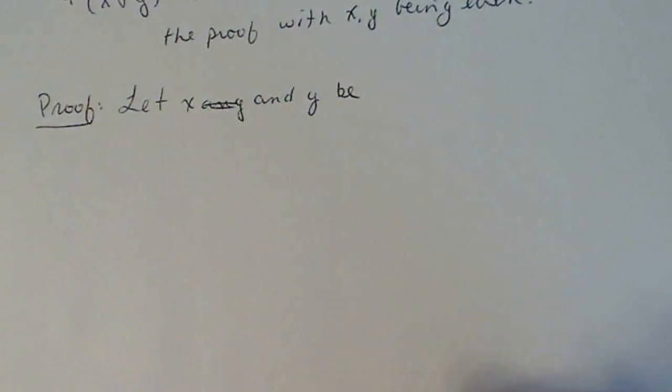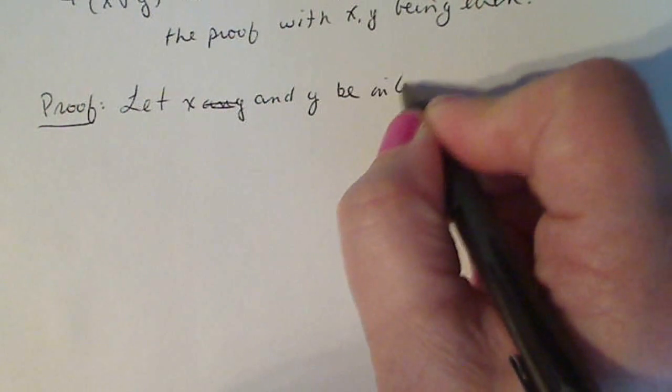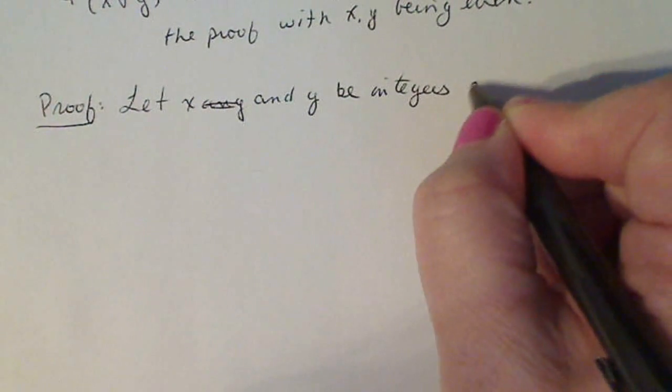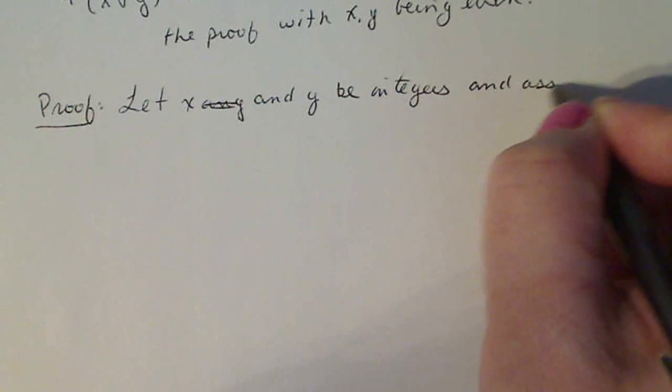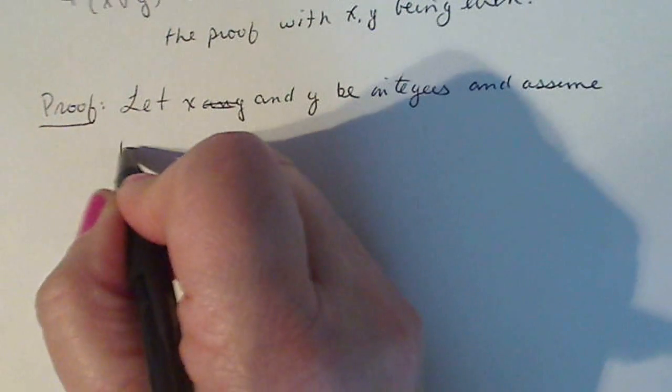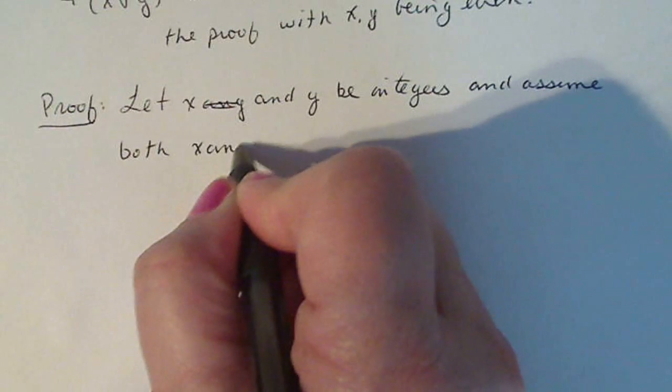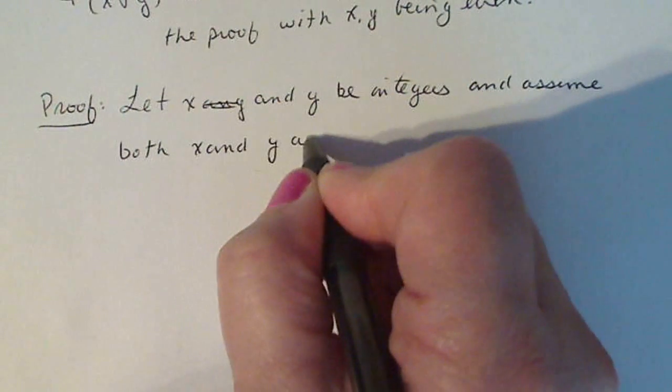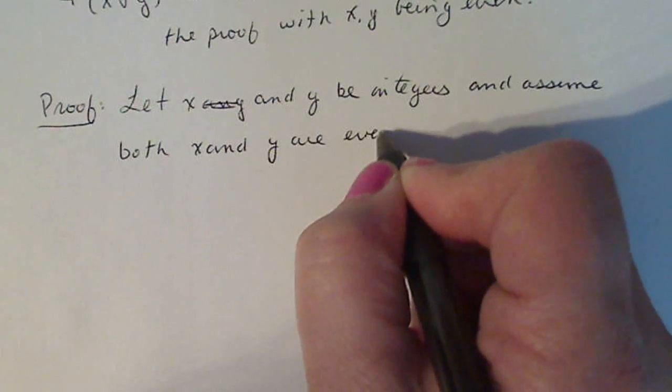Let x and y be integers because that gives me the groundwork to start on and assume both x and y are even. There's the start of the contradiction.